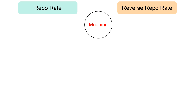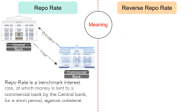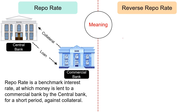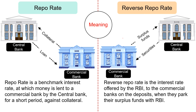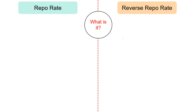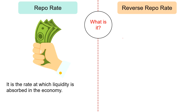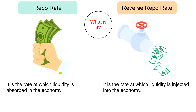Moving on to the differences between repo rate and reverse repo rate. Repo rate is the interest rate at which RBI lends money to commercial banks for a short period against collateral, i.e., government securities. As against, reverse repo rate is the interest rate offered by RBI to commercial banks on the deposits when they park their surplus funds with RBI. Repo rate is the rate at which liquidity is absorbed in the economy, whereas reverse repo rate is the rate at which liquidity is injected into the economy.